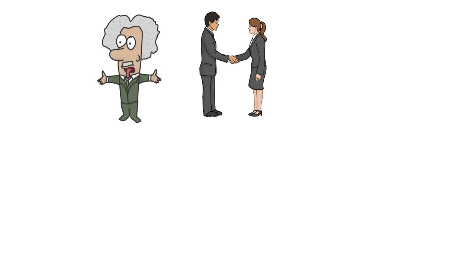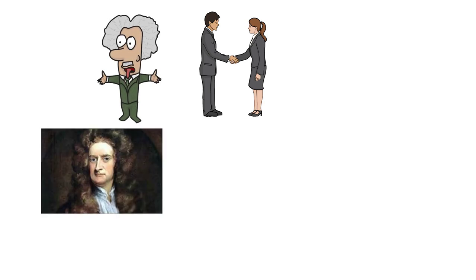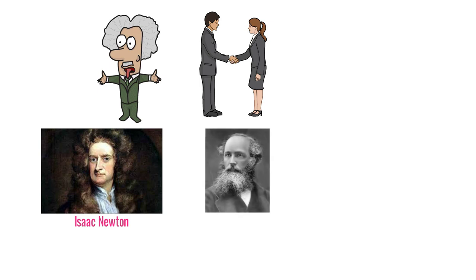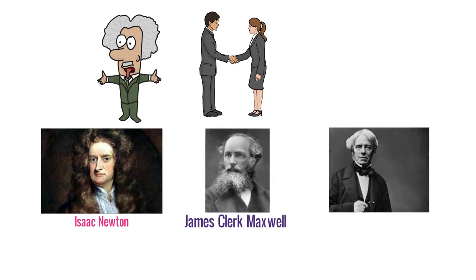Friends, I want to tell you one thing here. Albert Einstein used to keep photos of three scientists in his office. First, Isaac Newton. Second, James Clerk Maxwell. And third, Michael Faraday.